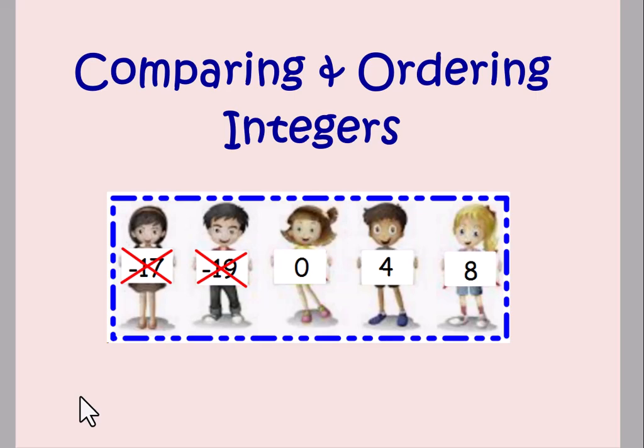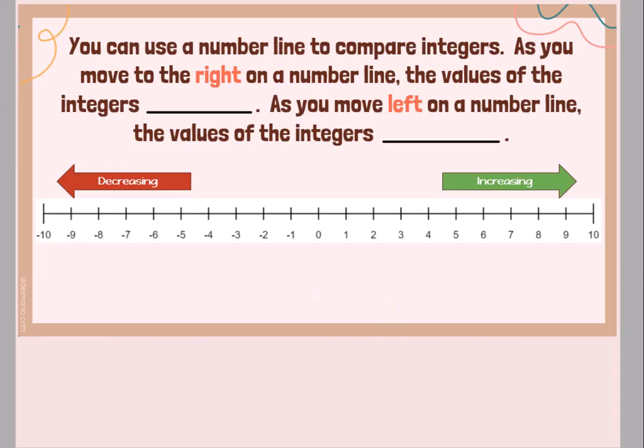So now we're going to talk about how we can take these positive and negative whole numbers and how we can order them, compare them and order them. See which is bigger, which is smaller. Put them in order from least to greatest or greatest to least.